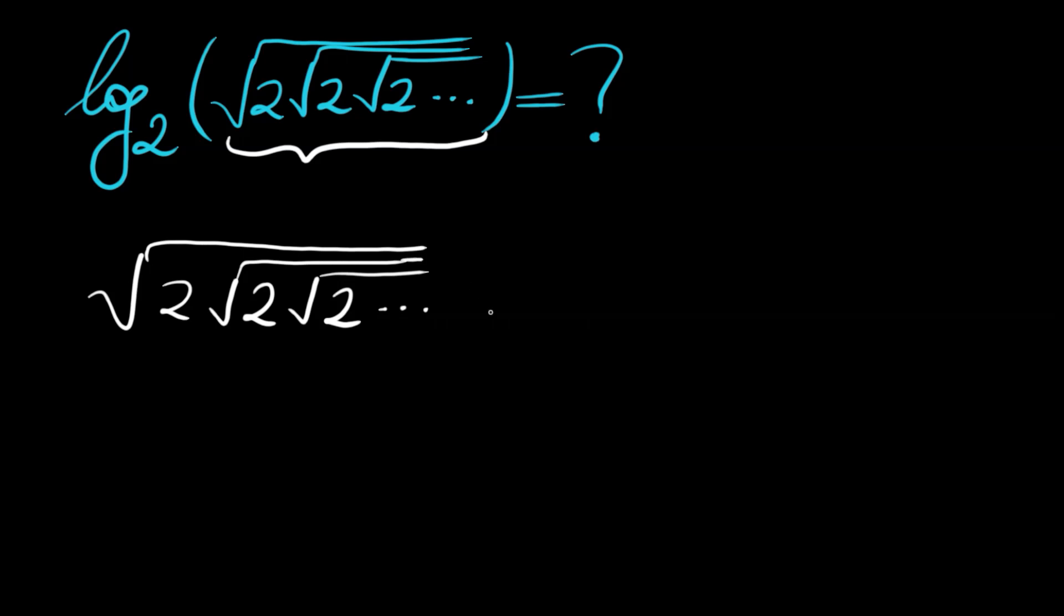The first way is naming this x. Then this part here again is equal to x since it is the same as our original expression. So this becomes square root of 2 times x equals x. Squaring both sides,